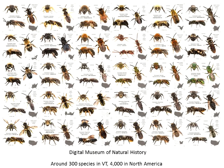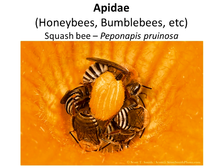There are tons of different kinds of bees. When you say bee, people often just think about honeybees. But in Vermont, there are around 300 different species, and 4,000 in North America. If you're interested in looking at insects up close, the Digital Museum of Natural History — Alex Cercia's Facebook page — has posters of this material.